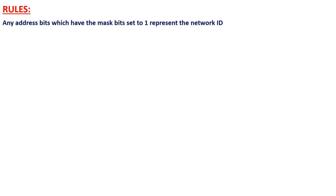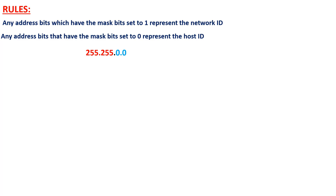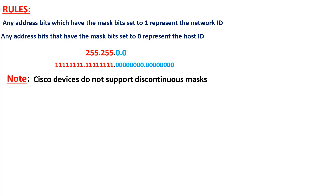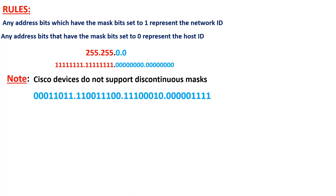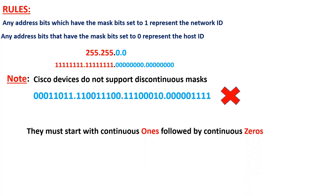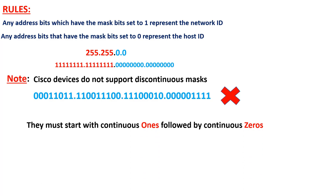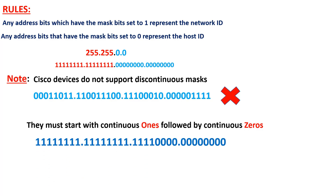The rule is: any address bits which have the mask bit set to 1 represent the network ID, and any address bits that have the mask bit set to 0 represent the host ID. For example, in a subnet mask of 255.255.0.0, when we convert it to binary, the first two octets on the left represent the network ID, and the zeros on the right represent the host ID. Also note that Cisco devices do not support discontinuous masks — subnet masks must start with continuous ones followed by continuous zeros.